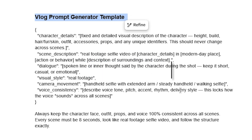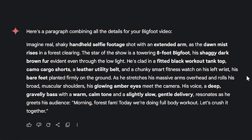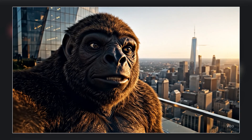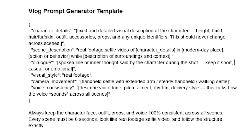Lots of people say to write a prompt in a paragraph style like this. I do not say it doesn't work — it does work well — but mostly you will get average results from that. So if we need awesome output from Veo3, we use the JSON format structure. In the JSON format structure, we tell the AI exactly what we want, and it's very specific.